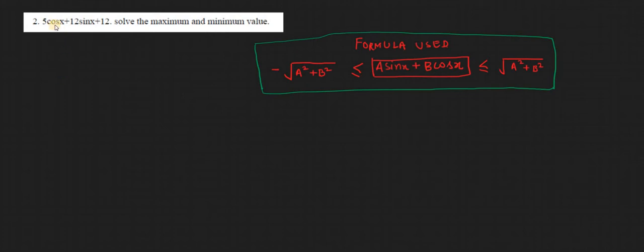Hello students, we have been asked the maximum and minimum value of 5cos(x) + 12sin(x) + 12. To solve this question we have two methods, so we will discuss both methods.